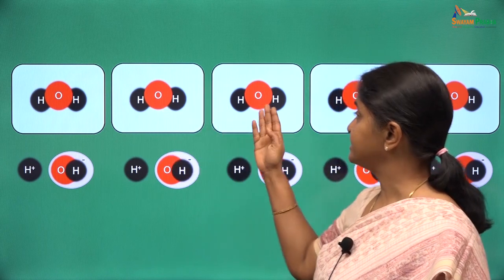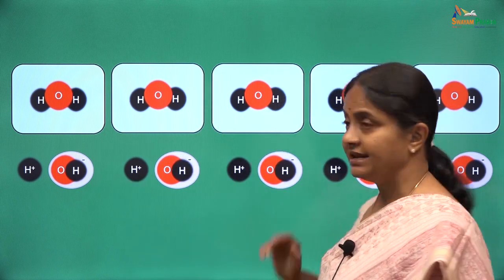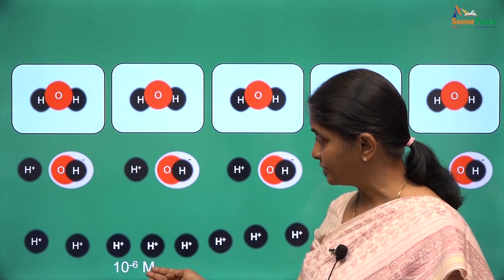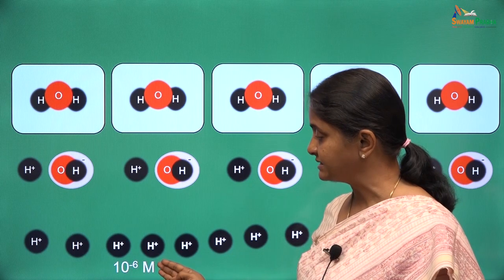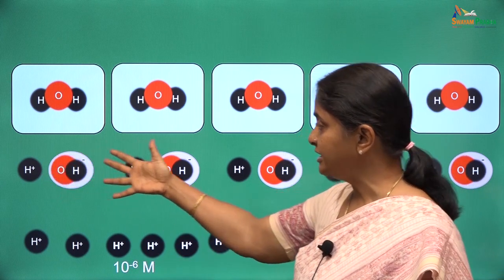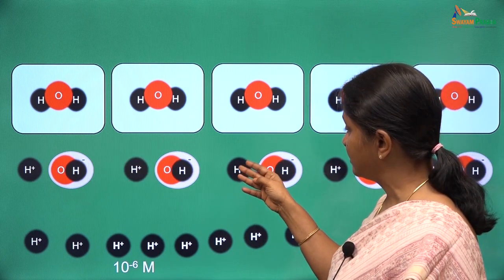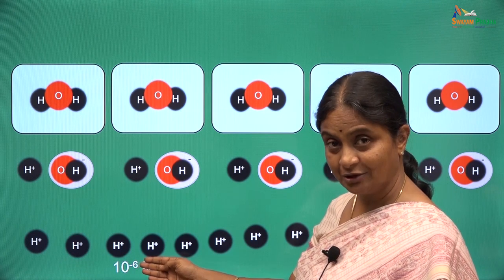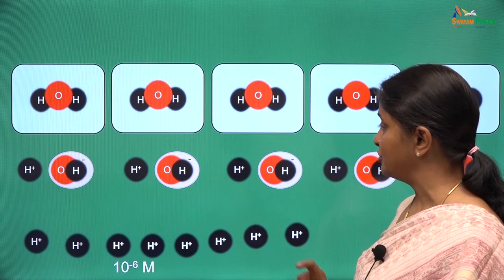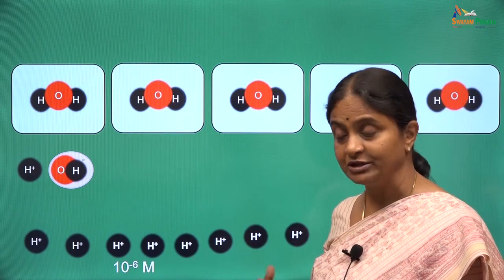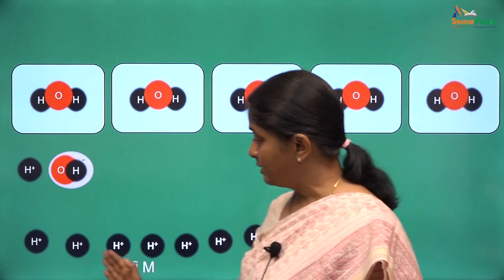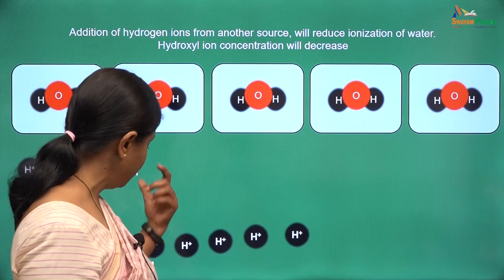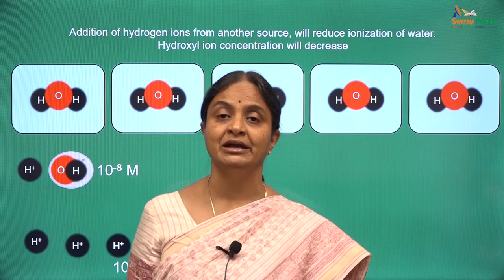Let us say these boxes represent stable water molecules and these the ionized water molecules. If we add extra protons by adding acid — say at a concentration of 10⁻⁶ molar — originally in water we had 10⁻⁷ or 100 nanomolar hydrogen and hydroxyl ions. When extra hydrogen ions are added, now it is at 1 micromole per liter. Some of the ionized water molecules will move into the stable state, and the hydroxyl ion concentration reduces such that the product remains at 10⁻¹⁴ molar.